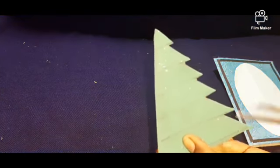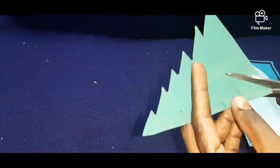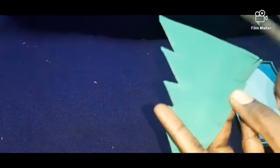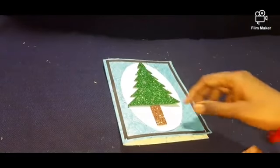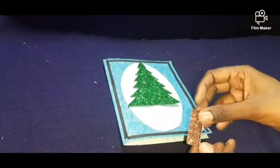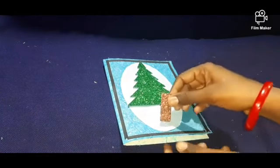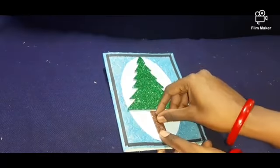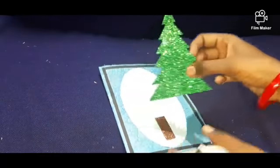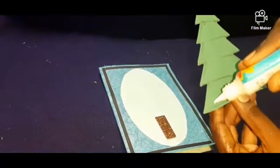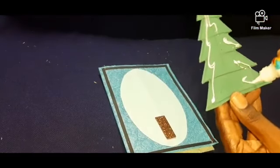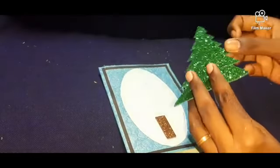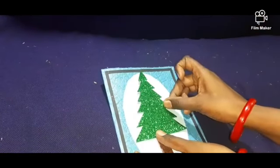One side cut it now, another side also you have to cut. After cutting you can take the brown color glitter foam and you can stick it in this middle. In this back side you can apply the glue and stick it in this top.